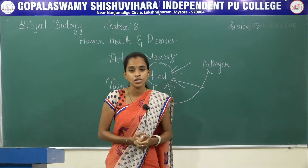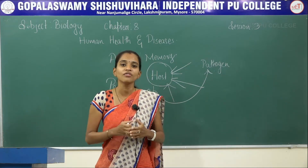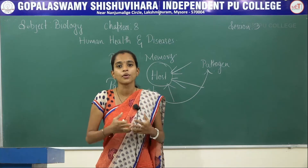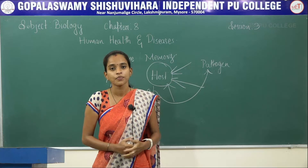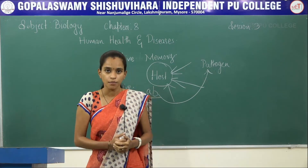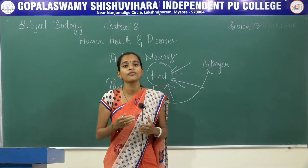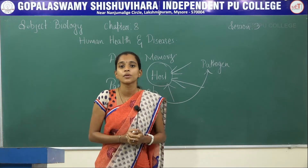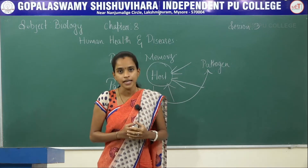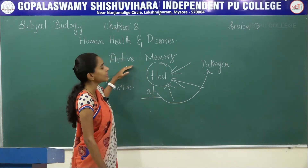Active immunity is memory-based. We make the host get exposed to inactive or weakened pathogens, so the body produces antibodies. Once the pathogen is recognized, the type of antibodies to be produced to destroy it is stored in the memory cells.